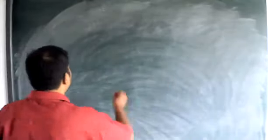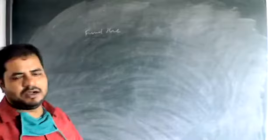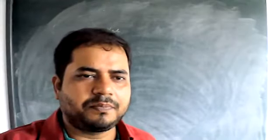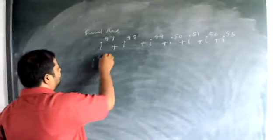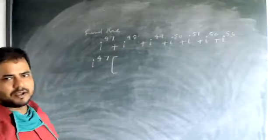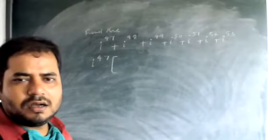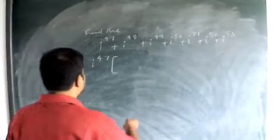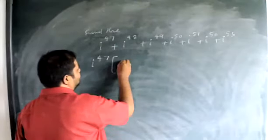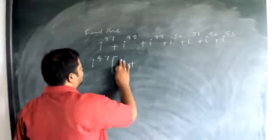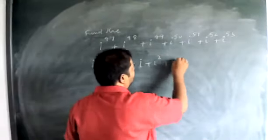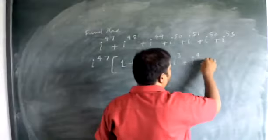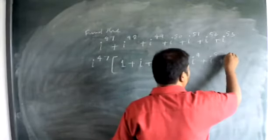See the solution — find the product. I don't have i^47 and i^48. So what are the powers of i? This is i plus i squared plus i cubed plus i to the power of 4 plus i to the power of 5 plus i to the power of 6.